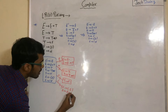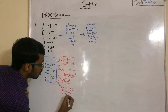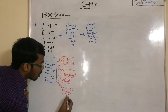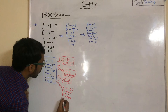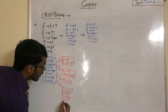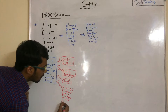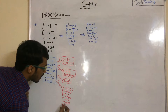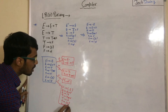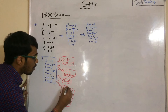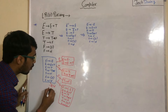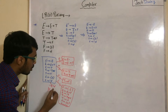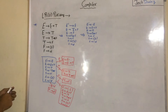Add productions from T: T to ·T star F and T to ·F. Add all productions from F: F to ·(E) and F to ·id. Now the only single production left on which we have not applied GOTO is id.